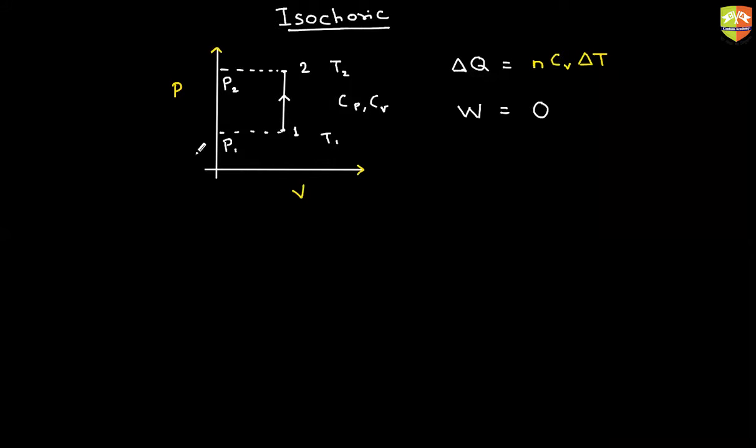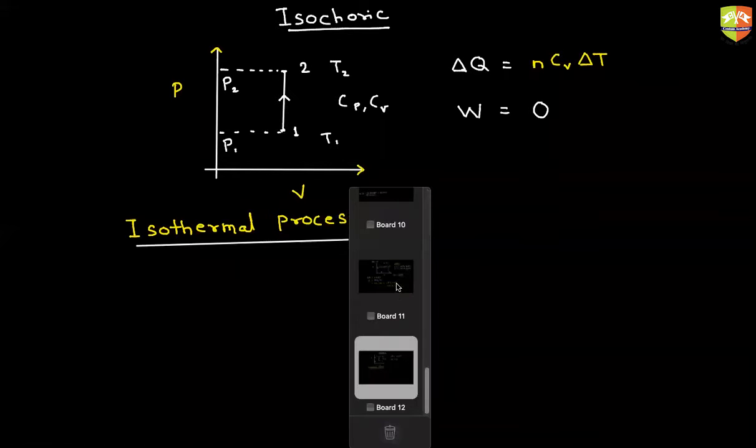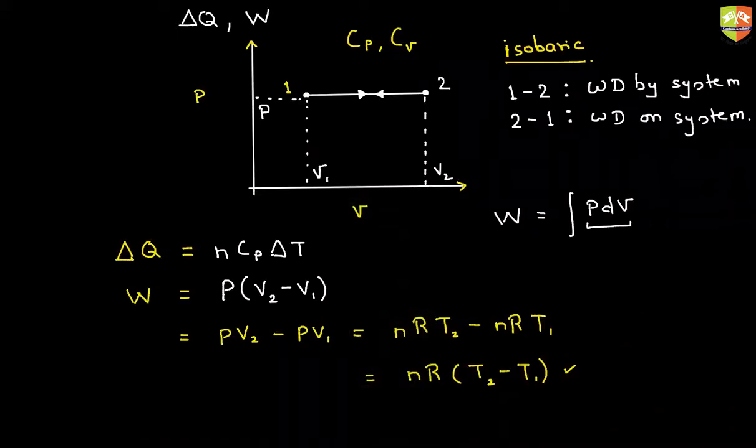This is isochoric process. Next, we are going to talk about isothermal process. By the way, every process has some process equation as well. There is a description of the path also.